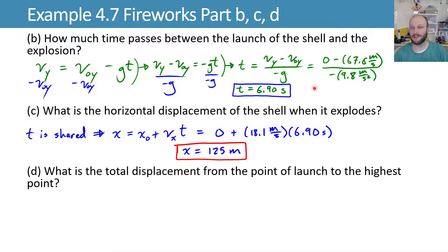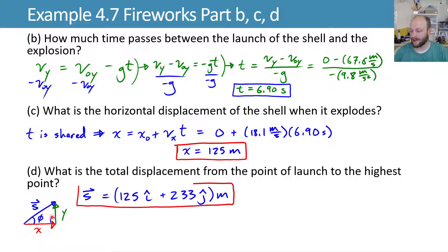So what's our total displacement from the point of launch to the highest point? We can combine our x-direction and our y-direction to get an overall positional vector with some resulting direction as well. So the total displacement, if we want, we could just write it as the x component in the i-hat plus the y component in the j-hat with units. So my positional vector, my final position as a displacement from my initial launch point is 125 in the i-hat plus 233 in the j-hat within units of meters.